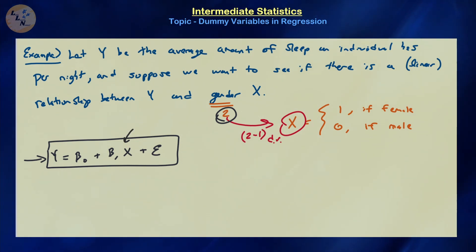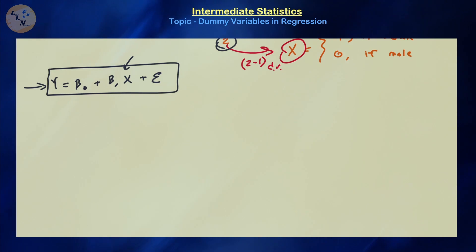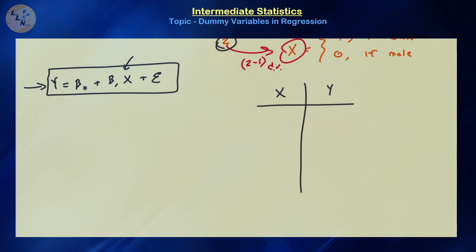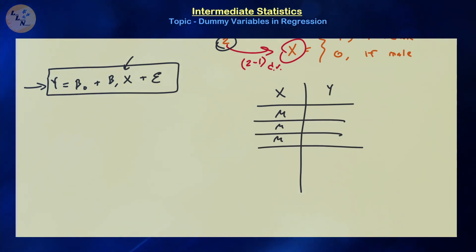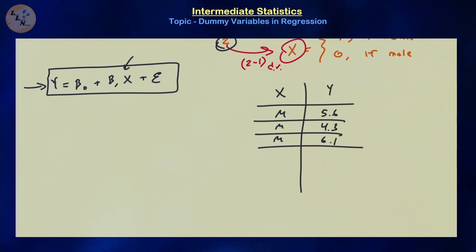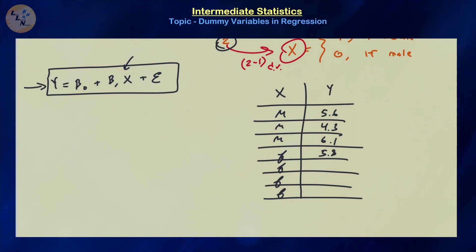We gather a sample by asking two questions: what is your gender, and on average how much sleep do you get per night? For three males, the responses were 5.6, 4.3, and 6.1 hours. For four females, the responses were 5.8, 5.7, 4.9, and 6.2 hours. By our definition, x equals 0 for males and x equals 1 for females.